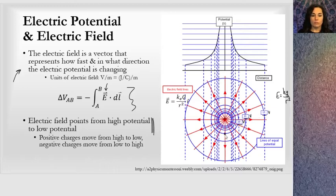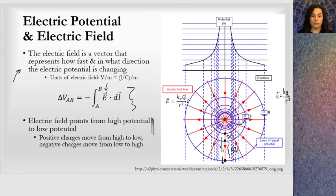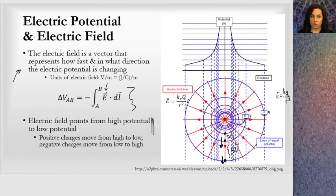The electric field being a large value means the potential is changing more quickly closer to the charge than farther away. From this point to this point we lose 5 volts, and from this point to this point we also lose 5 volts — a 5-volt change in each case. But as you move away, the electric field becomes smaller, which is a description of how fast the electric potential is changing. It changed 5 volts over a smaller distance near the charge, meaning a larger rate of change, represented by the length of the vectors.